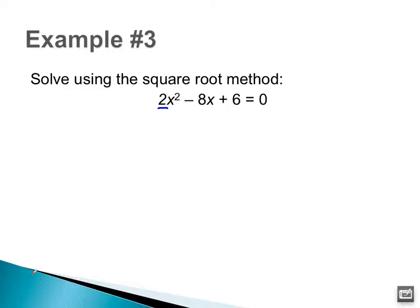So the first thing I need to do is get rid of that 2 by dividing everything by 2. 2x² ÷ 2 is x². 8x ÷ 2 is 4x. 6 ÷ 2 is 3. And on the right side, 0 ÷ 2 is 0. Now I'm ready to complete the square.